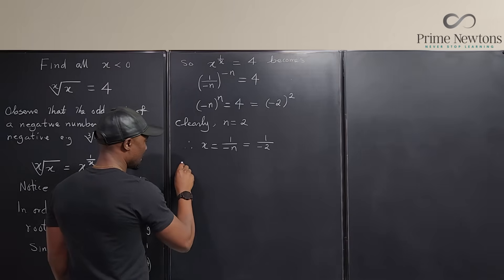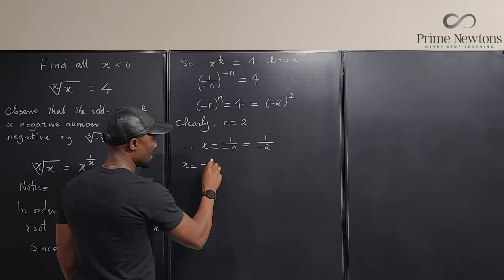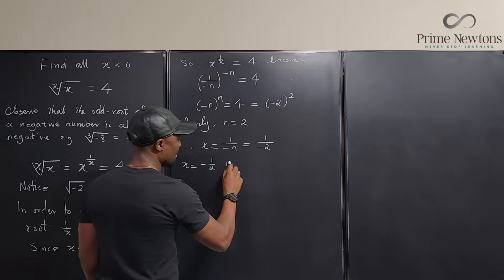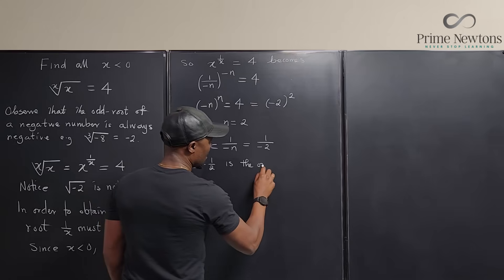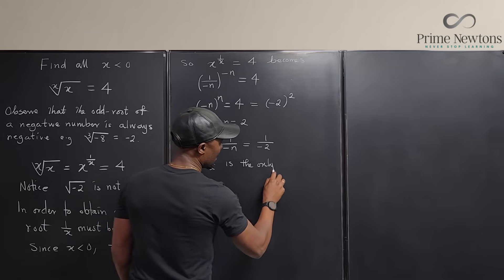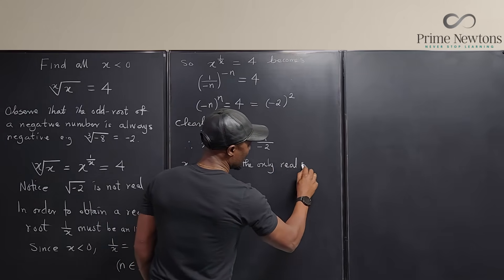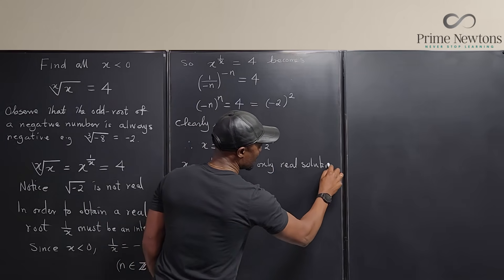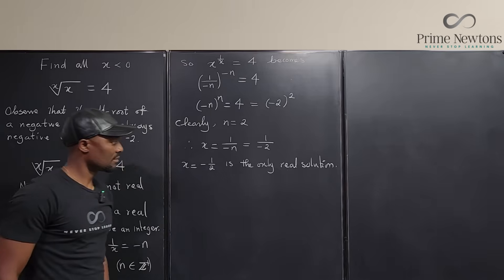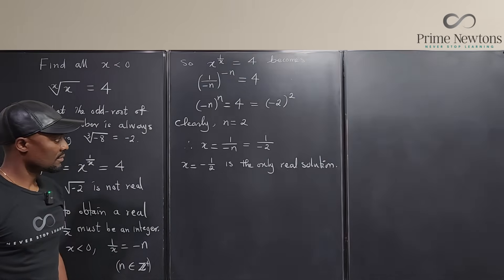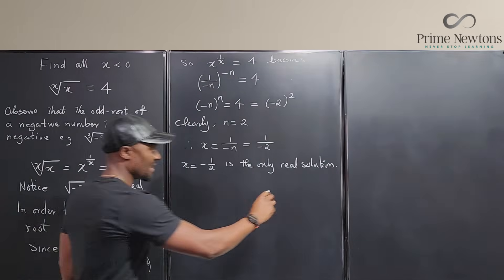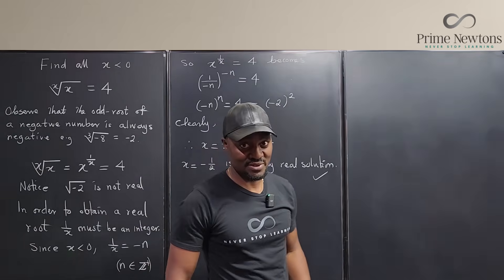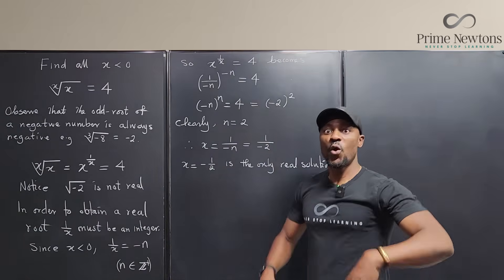So X equals negative 1/2, and this is the only real solution. This is what I was trying to explain in the other video.